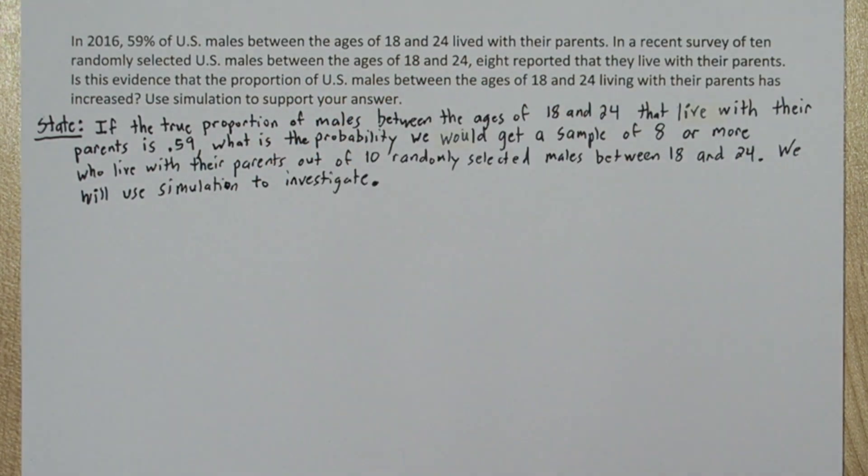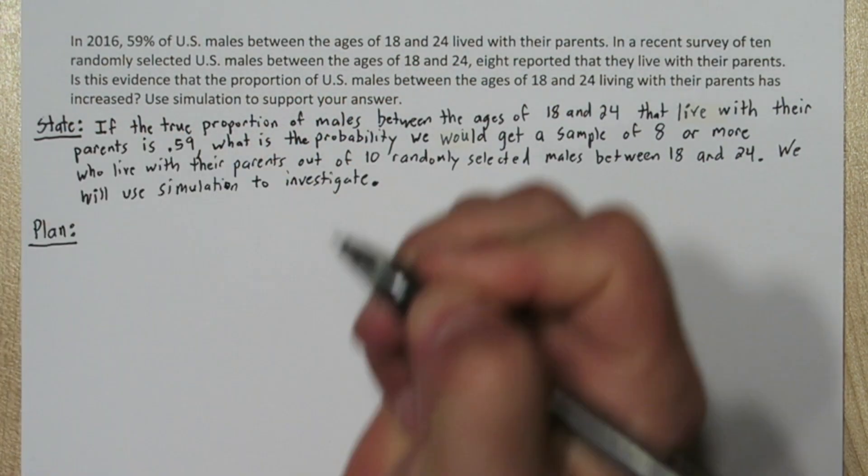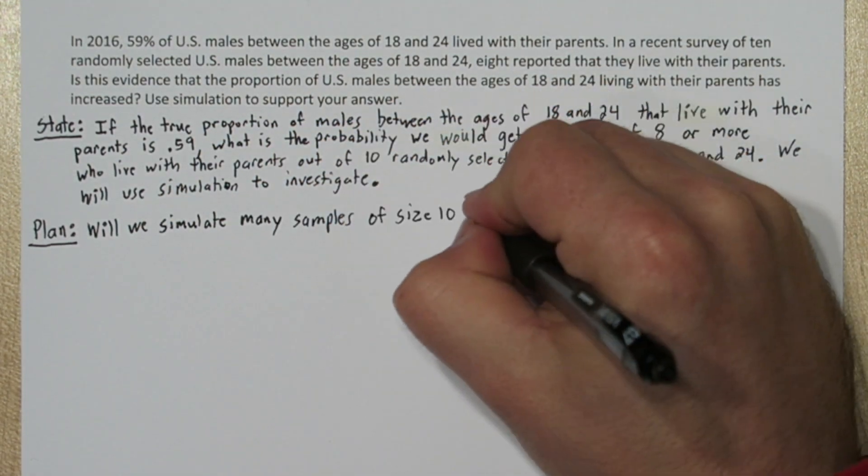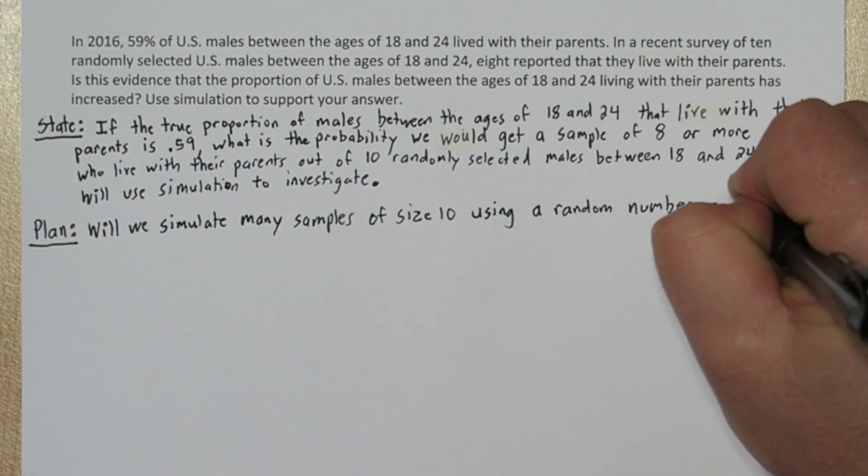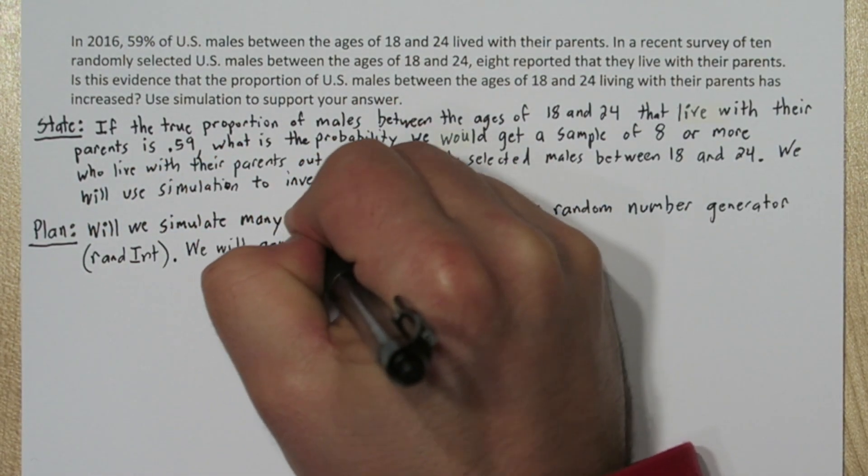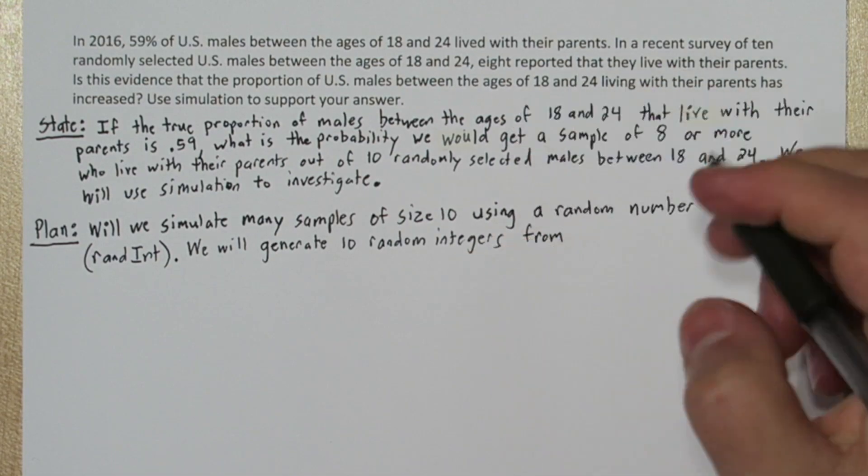We're going to use simulation to investigate. Next we're going to come up with a plan. In our plan step we're going to describe our simulation. We're going to simulate many samples of size 10 using a random number generator. We're going to use the randint function on the calculator.